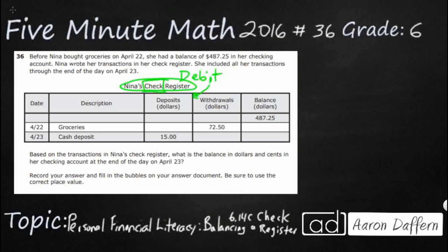So we have this little story here: before Nina bought groceries on April 22nd — referencing this right here — she had a balance of $487.25. You'll notice we have three different columns: deposits, withdrawals, and balance, with dollars listed under each. We won't include the dollar sign on every single entry. The balance is how much money you have in the bank, in your checking account, at any given point.